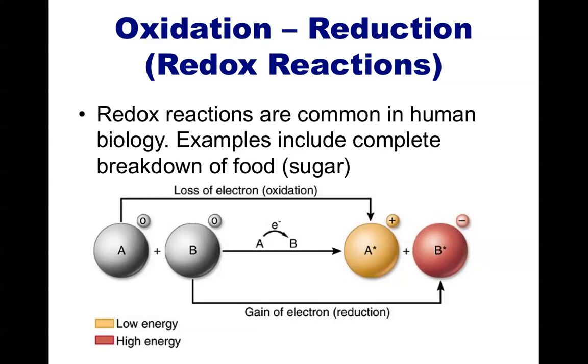The molecule that is losing the electron, in this case A, is said to have been oxidized. The molecule that has gained the electron was reduced. Don't become confused thinking that reduction means you have lost something. In fact, reduction refers to the gain of an electron.